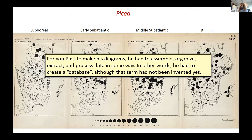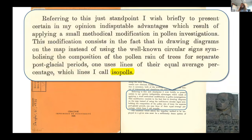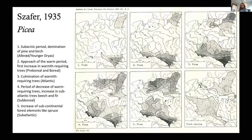Eric noted that for von Post to make these diagrams, he had to assemble, organize, extract, and process data — in other words, he had to create a database, even though that term had not yet been invented. Another important milestone was Mussifer's publication, which moved away from simply indicating the amount of pollen at each site to interpolating over these points to make isopollen maps, as he did here for Poland. This is the example of Picea.